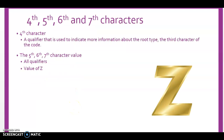Just like the mental health section, the fourth character is a qualifier used to give more information about the third character root type. Also like the mental health section, characters five, six, and seven are all qualifiers with the value of Z for none.